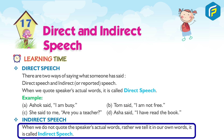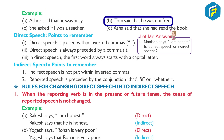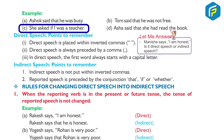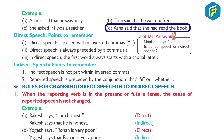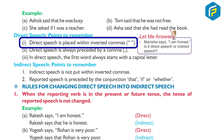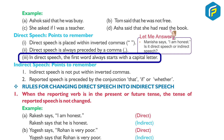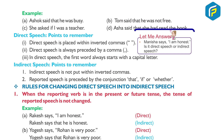Example (d): Asha said, 'I have read the book.' Indirect speech: when we do not quote the speaker's actual words but tell it in our own words, it is called indirect speech. Examples: (a) Ashok said that he was busy. (b) Tom said that he was not free. Direct speech points to remember: one, direct speech is placed within inverted commas; two, it is always preceded by a comma; three, the first word always starts with a capital letter.